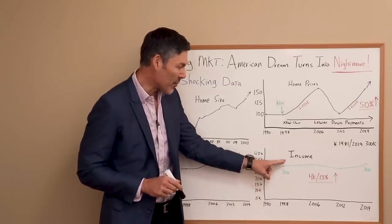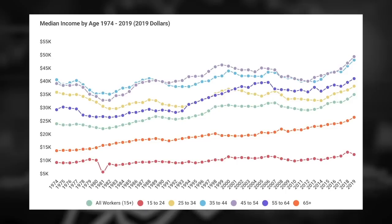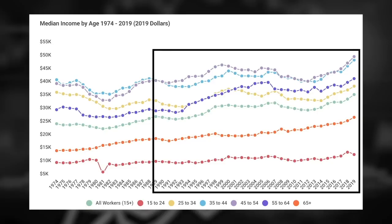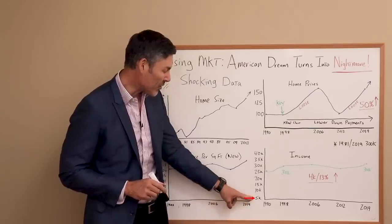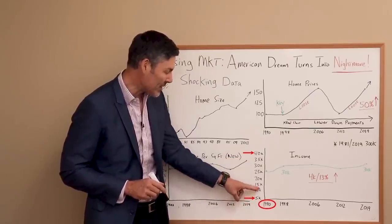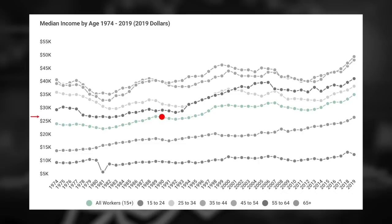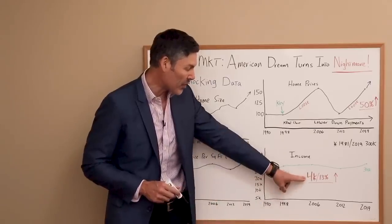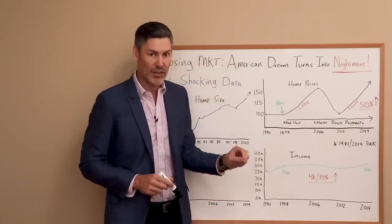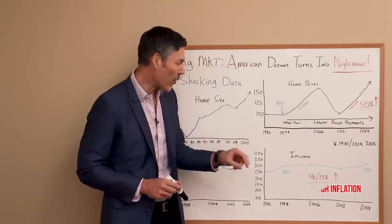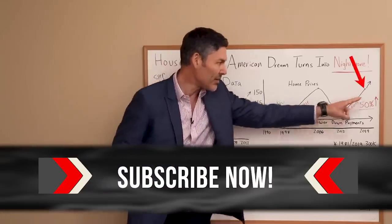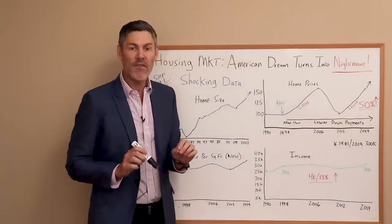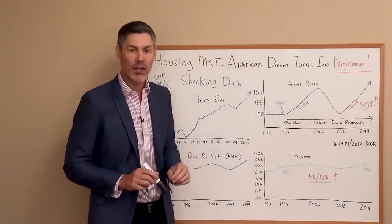Let's move on to the next chart. We've got average incomes of the middle class, and this goes from 1990 to 2019. Starts at $5,000 a year, goes up to $40,000. In 1990, right about $25,000. And this is adjusted for inflation. 1998 — that key year — right about $30,000. It goes up and down a bit to where we are in 2019 at $34,000. That's an increase of $4,000, or 13% adjusted for inflation.